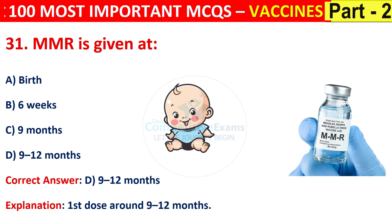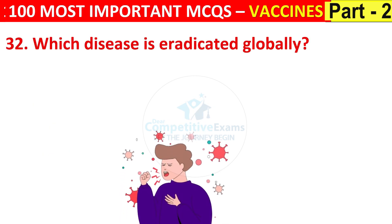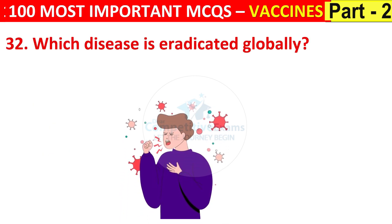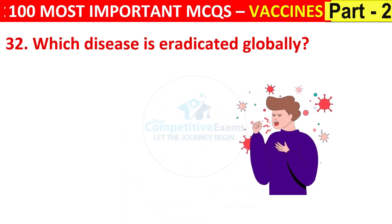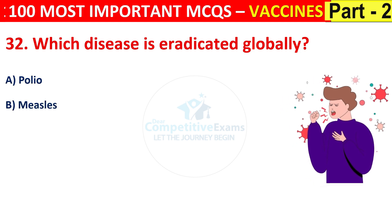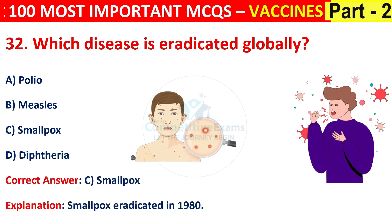Question number 32. Which disease is eradicated globally? Options are polio, measles, smallpox, or diphtheria. The correct answer is C, that is smallpox. Smallpox was eradicated in 1980.